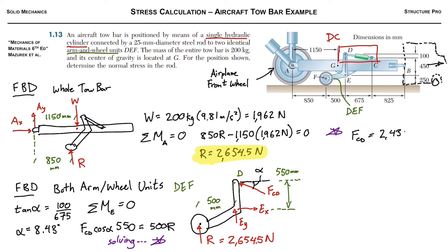We can solve FCD equals 2439.5 newtons. We'll highlight that, that's the last thing we need to calculate the stress because we know that stress equals F over A.